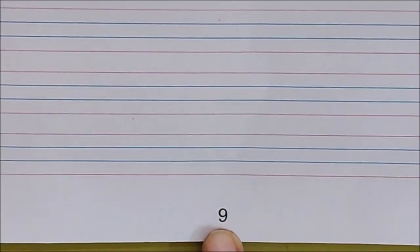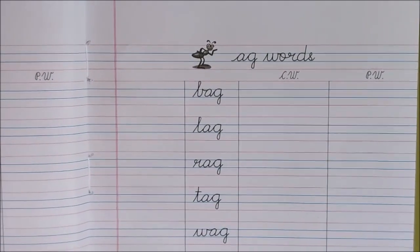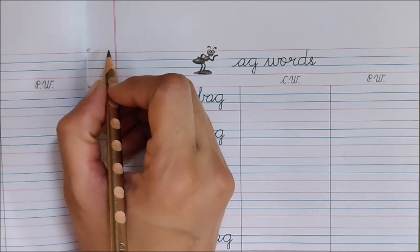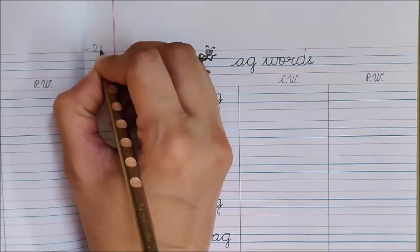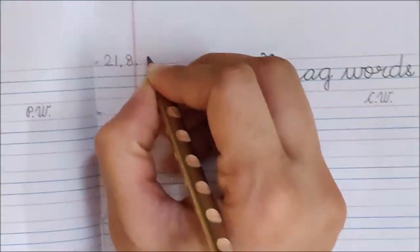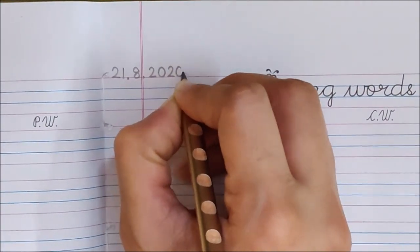I have opened page number 9. Today we will do this page. So children write down the date here. Today is August 21. 21 dot. 8 dot. 20. 20.